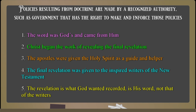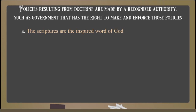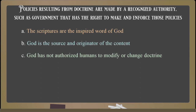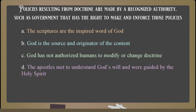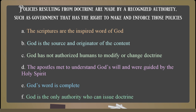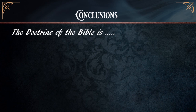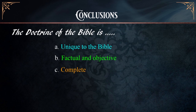The final revelation was given to the inspired writers of the New Testament. The revelation is what God wanted recorded — it is his Word and not that of the writers. From these points we can draw valid conclusions: the scriptures are the inspired Word of God; God is the source and originator of the content; God has not authorized humans to modify or change doctrine; the apostles met to understand God's will and were guided by the Holy Spirit; God's Word is complete, and God is the only authority who can issue doctrine. Therefore, the doctrine of the Bible is unique, factual, objective, complete, and not subject to change.